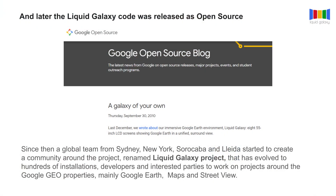A few years later, in September 2010, Google decided to release the Liquid Galaxy code as open source. And since then, a global team of people from Sydney, Australia, New York, US, Sorocaba, Brazil, and Jaida, Spain, started to create a community around this project. And we renamed it to Liquid Galaxy project because it became a Liquid Galaxy open source project.